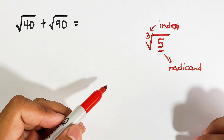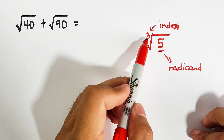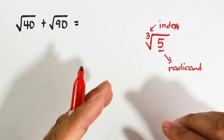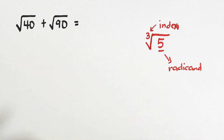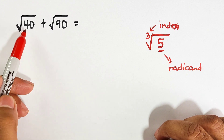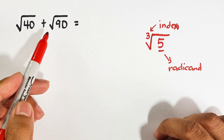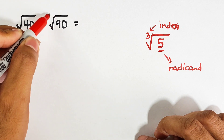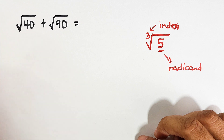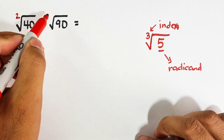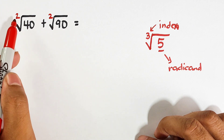Basically the rules are simple: if they have the same index and radicand, we can easily combine or add the two radicals. In this case, we have the square root of 40 plus the square root of 90. We don't see indices written here, but don't be confused — there is an invisible index of 2, and as you can see they have the same indices.